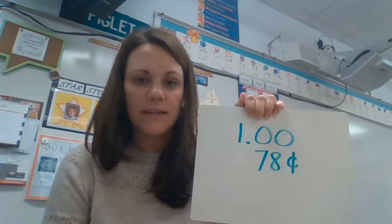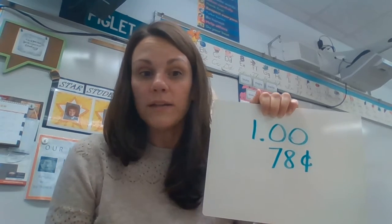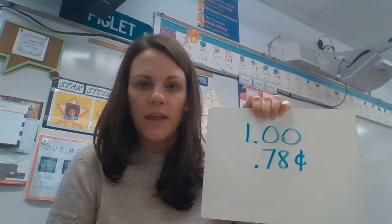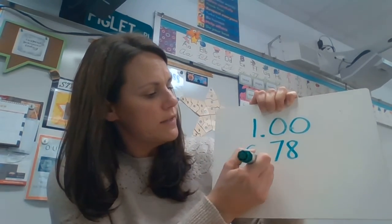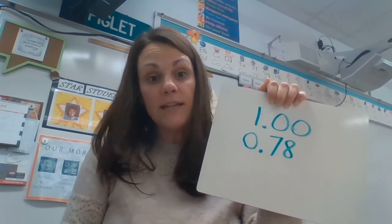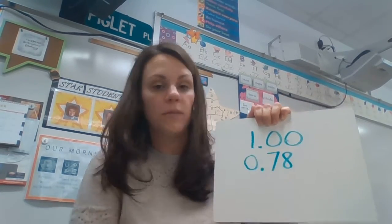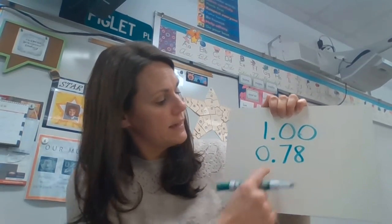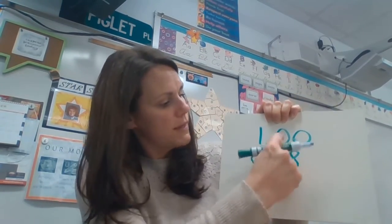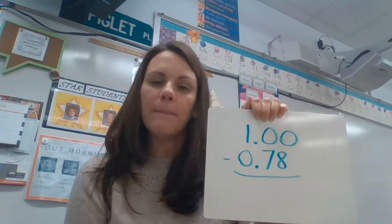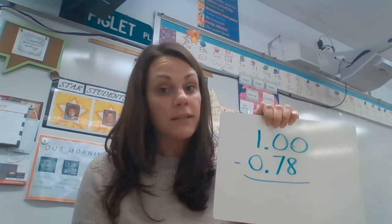Now, 78 cents does not have a decimal. Remember, 78 cents isn't quite a dollar — it's still less than a dollar — so we put that decimal before the number 78. It's almost like 78 cents is zero dollars and 78 cents, and one dollar is one dollar and no cents. You could even think of it like 100 pennies, because the dollar equals 100 pennies. Now that I have this all lined up — decimals match up, ones, tens, hundreds — I can subtract.